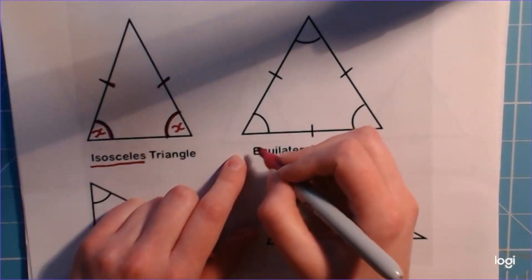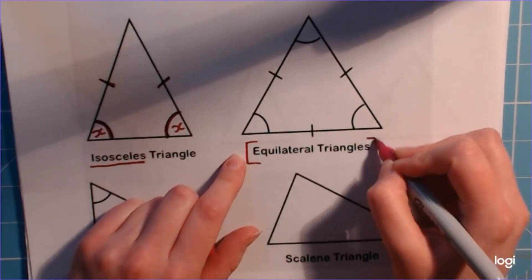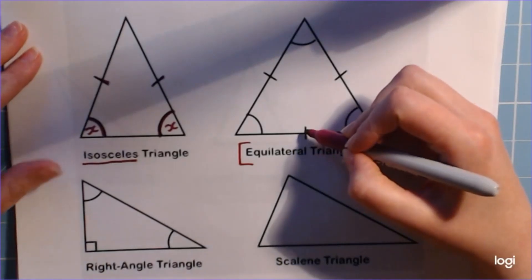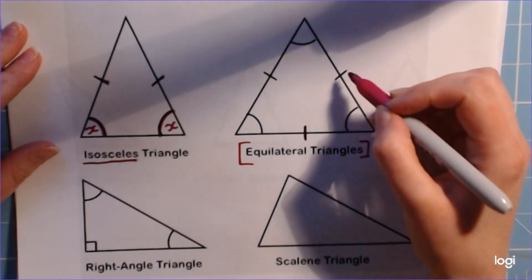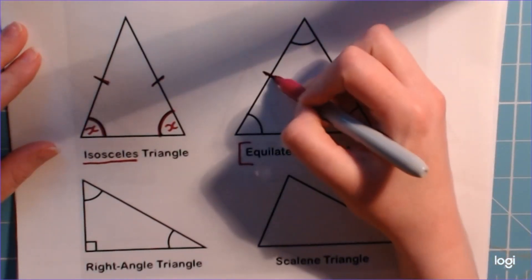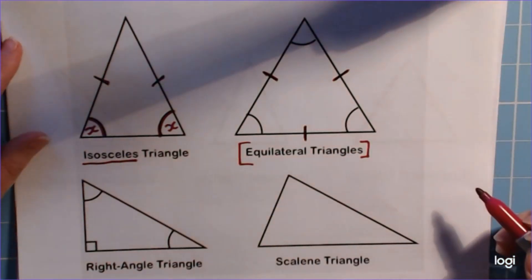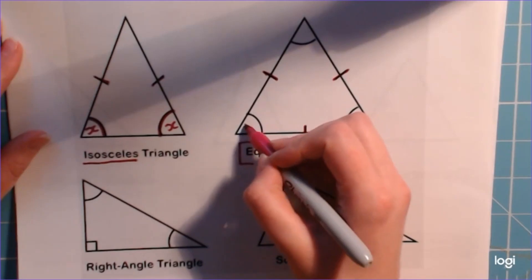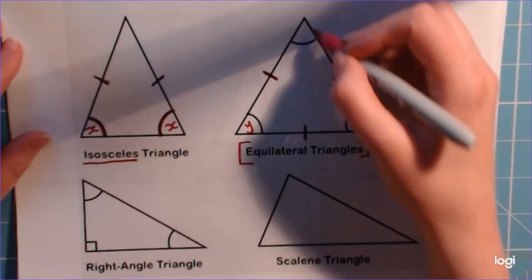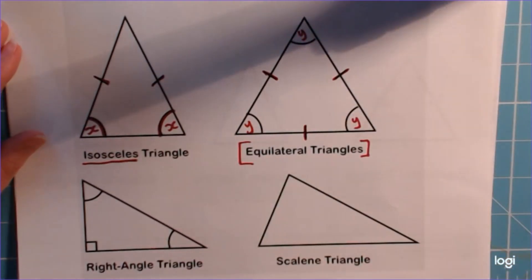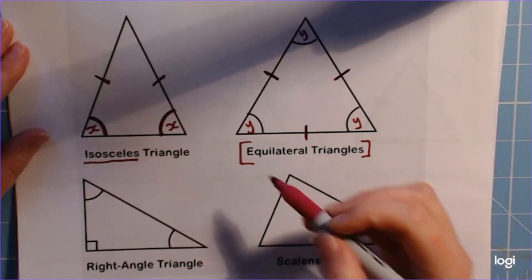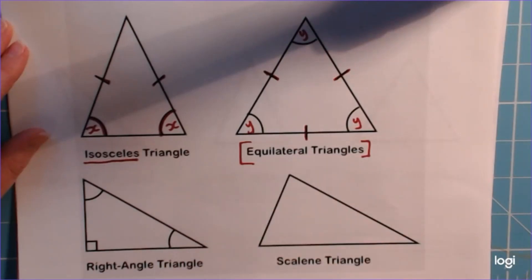Equilateral triangle, this is one you're probably familiar with from primary school. It's my favorite, it's just so nice and symmetrical. We've got one, two, three equal sides all the same length, and therefore we have got, we'll call them Y this time, three equal sized angles. In the next video we're going to put up, I'm going to explain to you how we can calculate these angle sizes here.